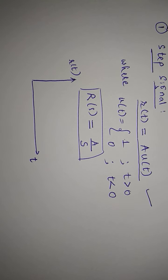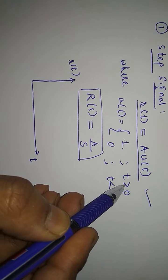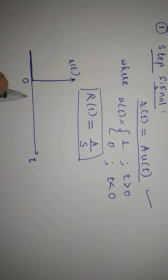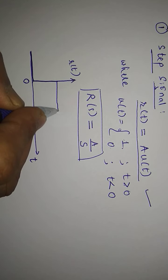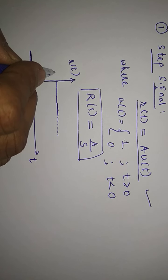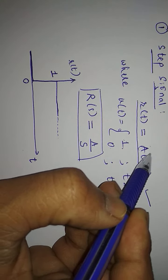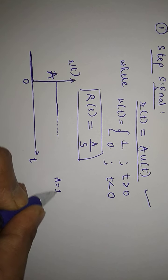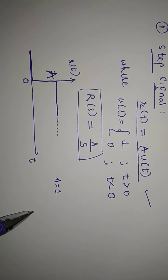If I want to sketch r(t) = A·u(t): since u(t) = 1 for t greater than zero and zero for t less than zero, for t less than zero it is zero everywhere. Once t becomes greater than zero, the value automatically changes to one and stays at that value forever. This is how the unit step signal looks like. If it is a unit step, then A equals one; if the amplitude is A, this level would be A. This is the first standard test signal, the step signal.